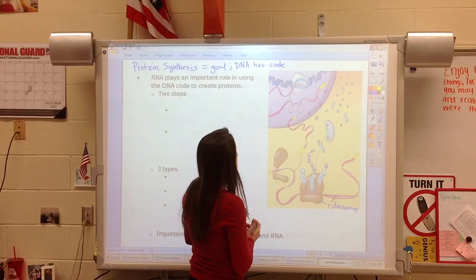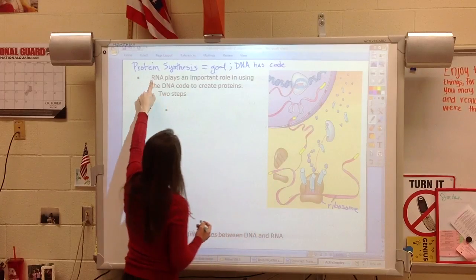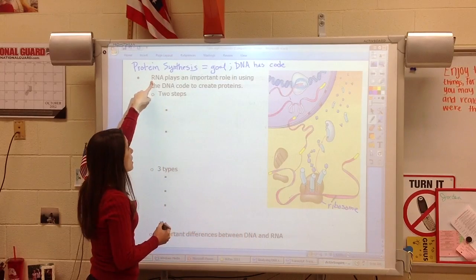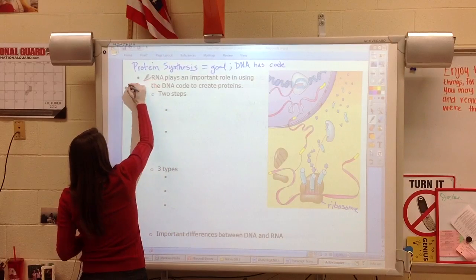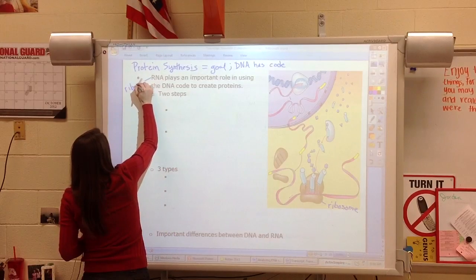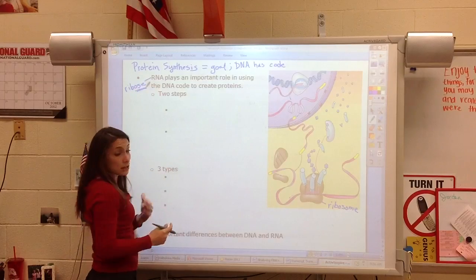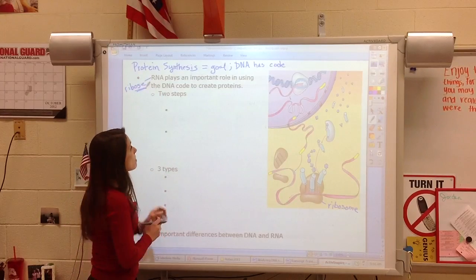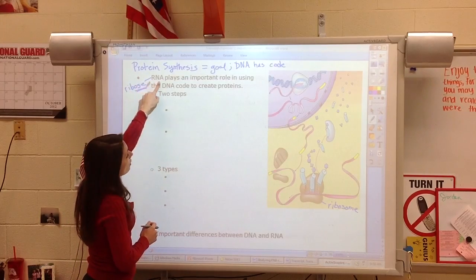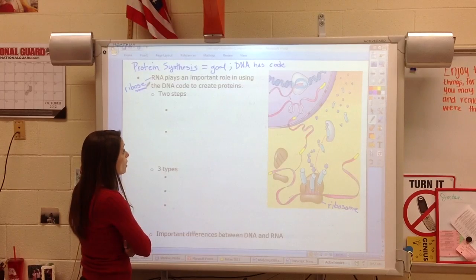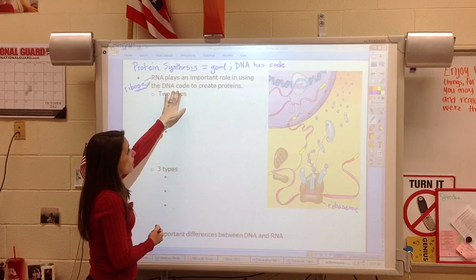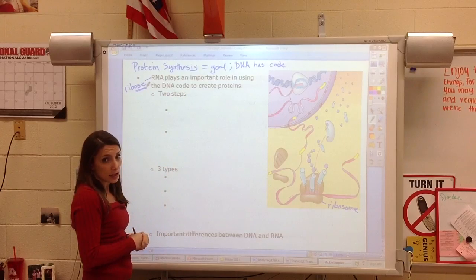So the more efficient and more effective use of the DNA is to be able to get copies of specific genes. And so what we're going to see is a molecule called RNA. That's ribonucleic acid because it has the sugar ribose. Notice the N-E-O-S-E. That's the sugar. And so ribonucleic acid is going to play an important role in using the DNA code to create proteins.